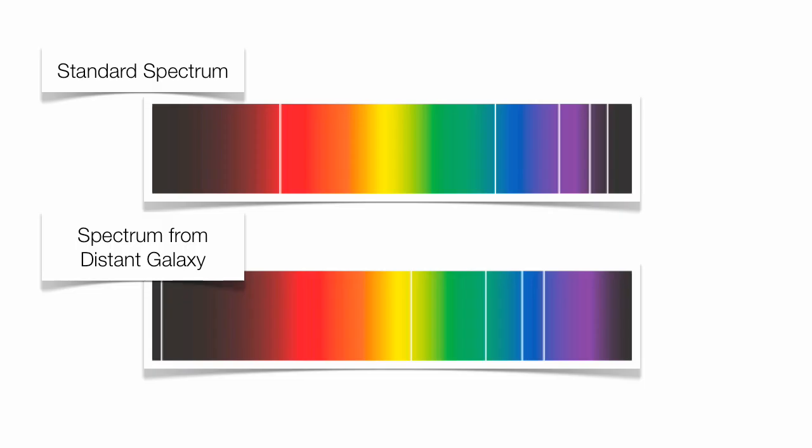The way we categorize our electromagnetic spectrum is by wavelength. Scientists can look at light from distant stars and galaxies through a spectroscope. The light produces almost like a fingerprint. Looking at the fingerprint in the standard spectrum, let's assume that's a fingerprint for the element hydrogen.